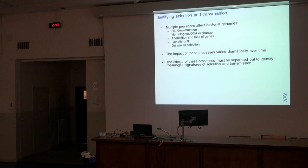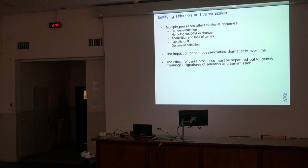At some timescales, some factors will be more important, and at other timescales, other factors will be more important. So if you want to understand what are the processes of selection, what's under selection in the chromosome, or if you want to understand how bacteria are related and therefore work out how they're transmitted, you need to separate out all of those different signatures. You can't just take the whole genome, treat it as a single entity, and expect to understand any processes going on.